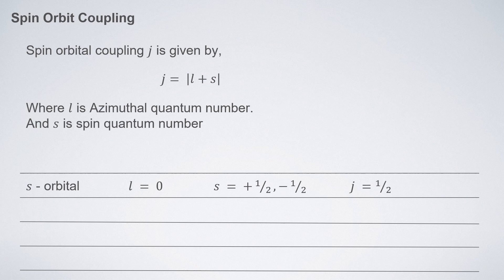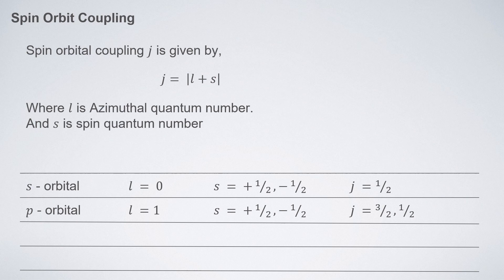For p orbitals, l equals one and s equals plus or minus one-half. So j becomes one plus one-half equals three-halves, or one minus one-half equals one-half.